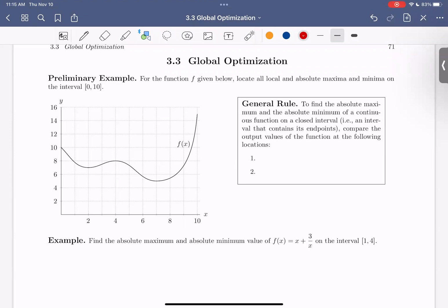Optimization is just a general word for either maximum or minimum. In this preliminary example, we're given a function on the graph below, and we want to locate all absolute and local maximum and minimum on the interval from 0 to 10. Notice you have a closed interval.